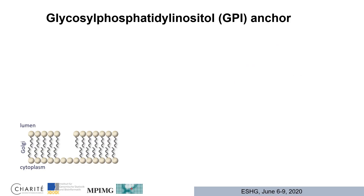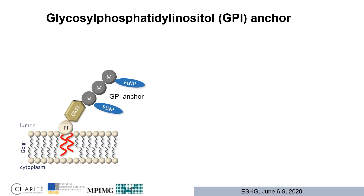In GPI-Anchor deficiency, Glycosylphosphatidylinositol — shortly GPI-Anchor — plays a crucial role. The GPI-Anchor itself consists of different subunits, mostly sugar units, that attach GPI-anchored proteins on the cell surface and more specifically on the cell membrane. There are many genes involved in GPI-Anchor synthesis and maturation, making it a quite complex pathway. Among these genes we have PIG-V, which encodes for a mannosyltransferase important for the attachment of the second mannose to the GPI-Anchor.